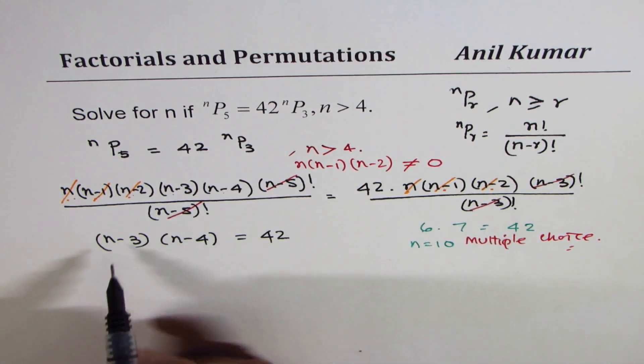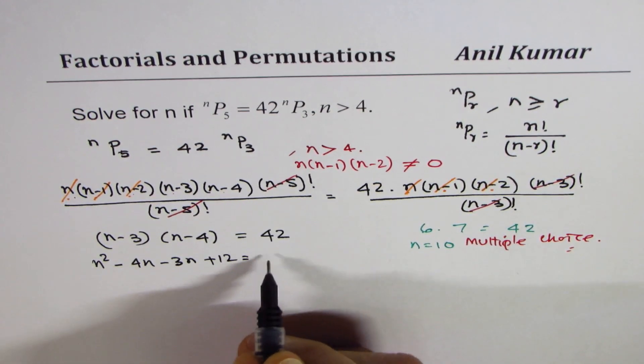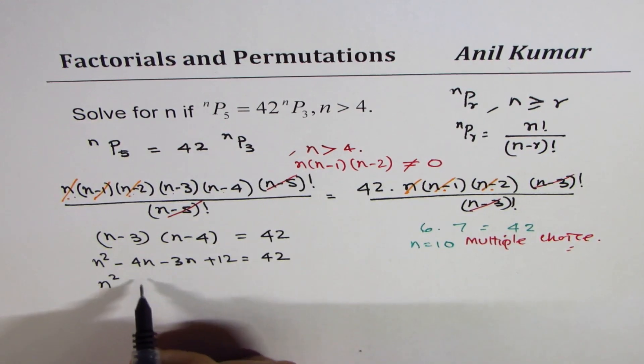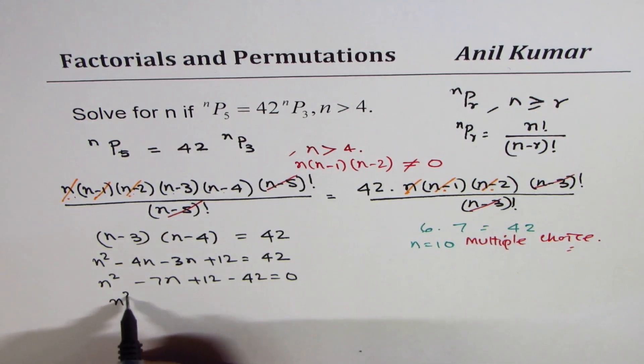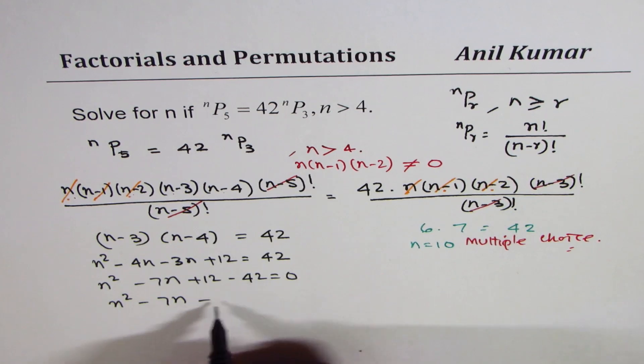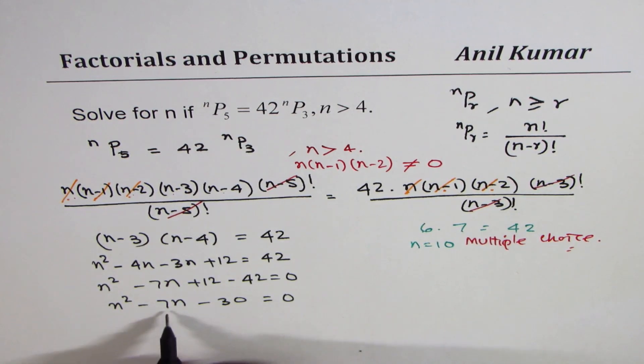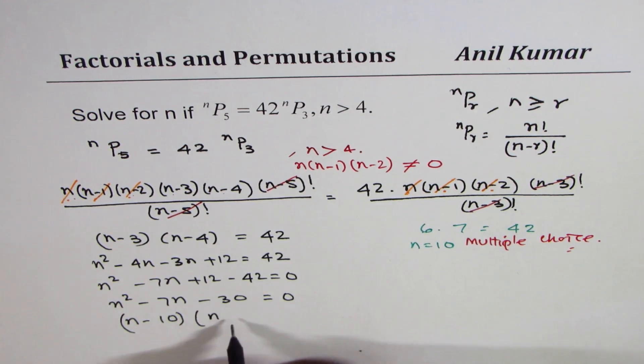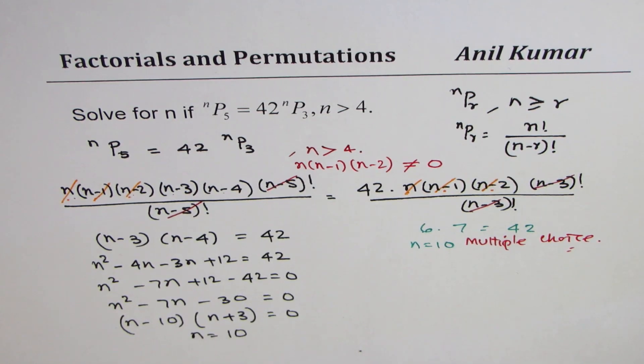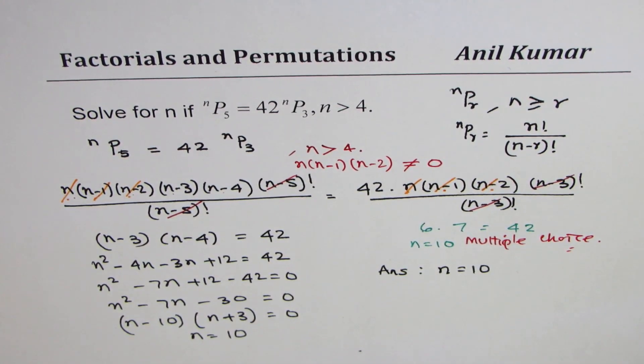Now, let's do the quadratic equation. When you expand, you get n² - 4n - 3n + 12 = 42. That gives you n² - 7n + 12 - 42 = 0. n² - 7n - 30 = 0. And you can get this with (n-10)(n+3). Solving this, you get n = 10. So you do get your answer as n = 10. That is really the right answer.